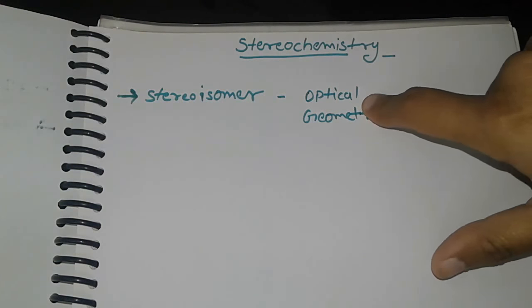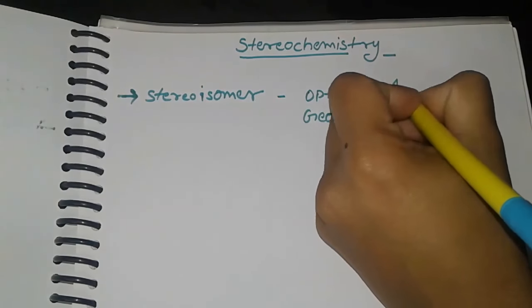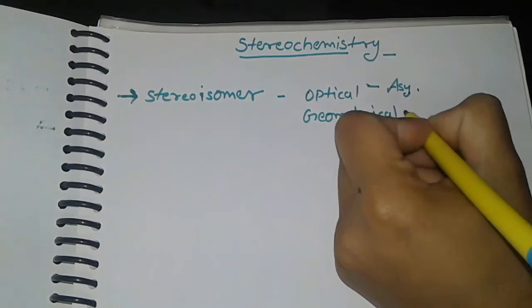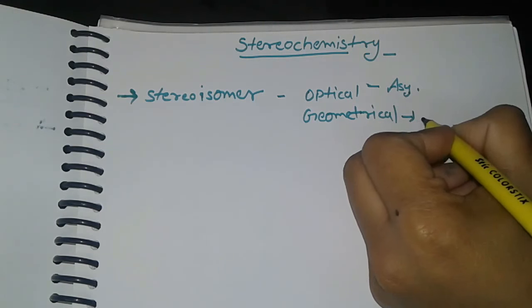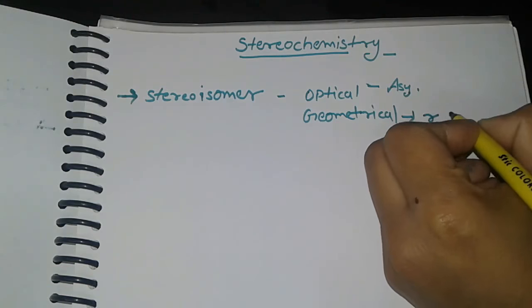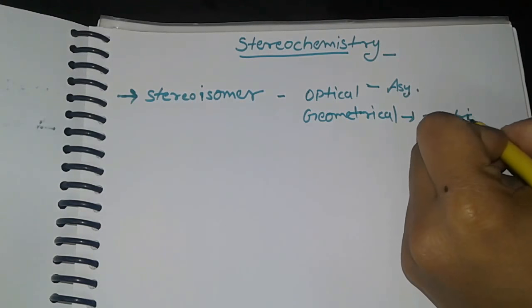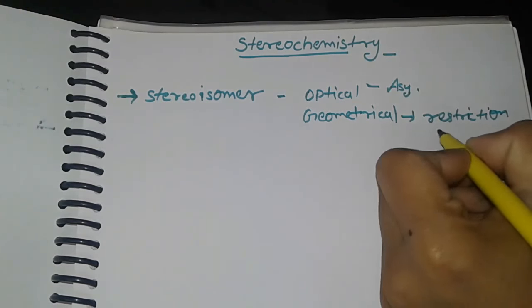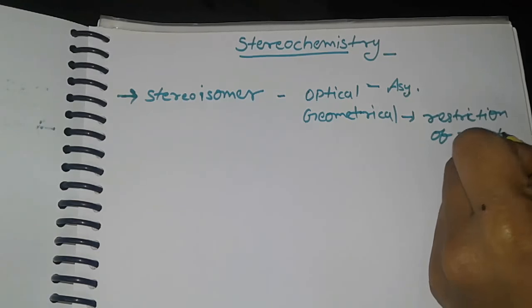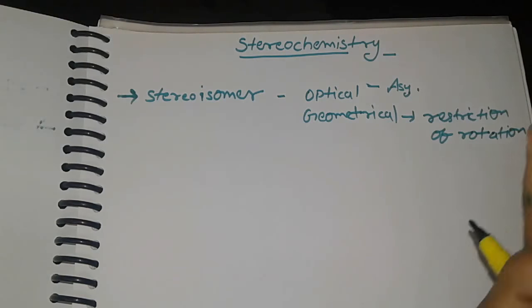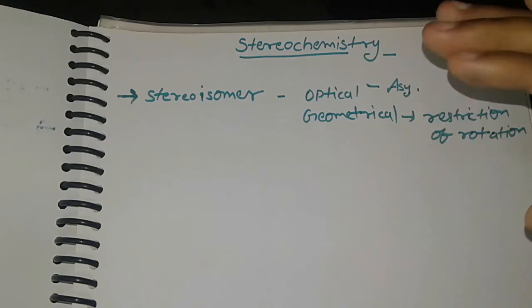Optical stereochemistry isomers' main characteristic point is asymmetry. Geometrical stereochemistry isomers are due to restriction of rotation. Restriction of rotation means free rotation is not available. This is why it is stereochemistry isomers.